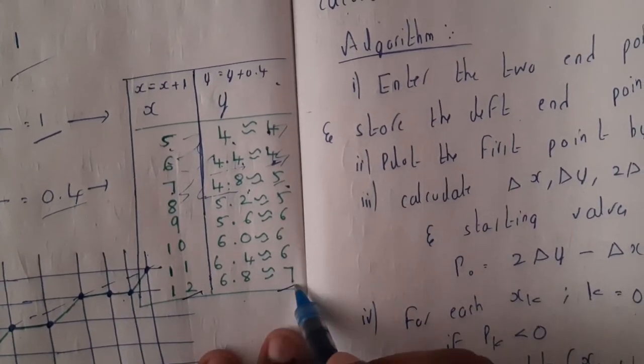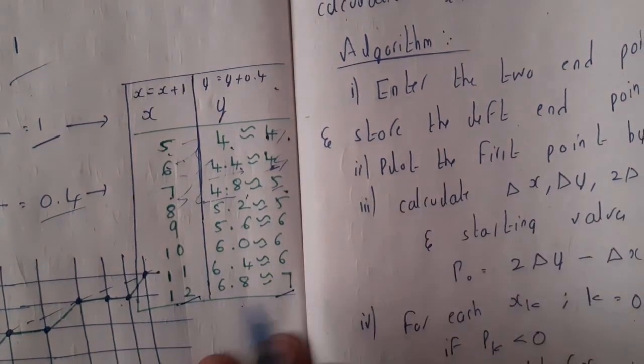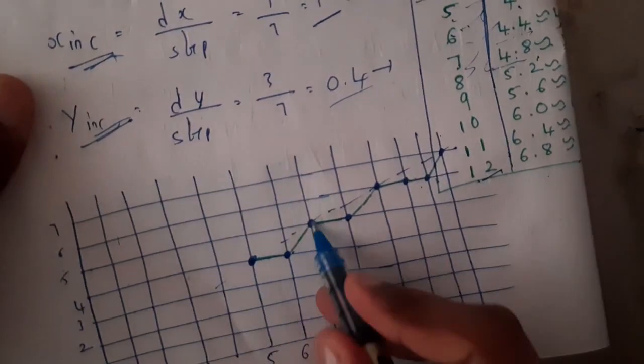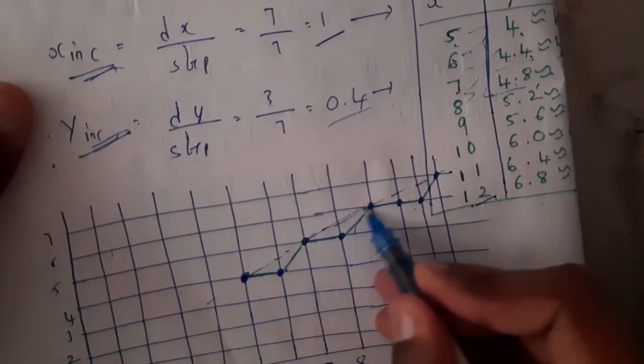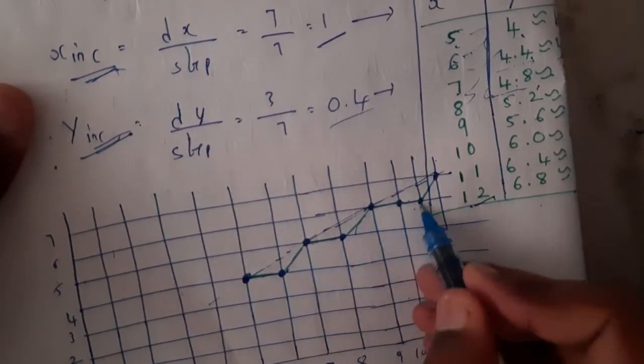At the end you'll be reaching to your end point. This is 5 comma 4 is your start point and 12 comma 7 is your end point. So if you plot these points, these will be the points. Basically your line should be in this way but you got it in this way like steps.